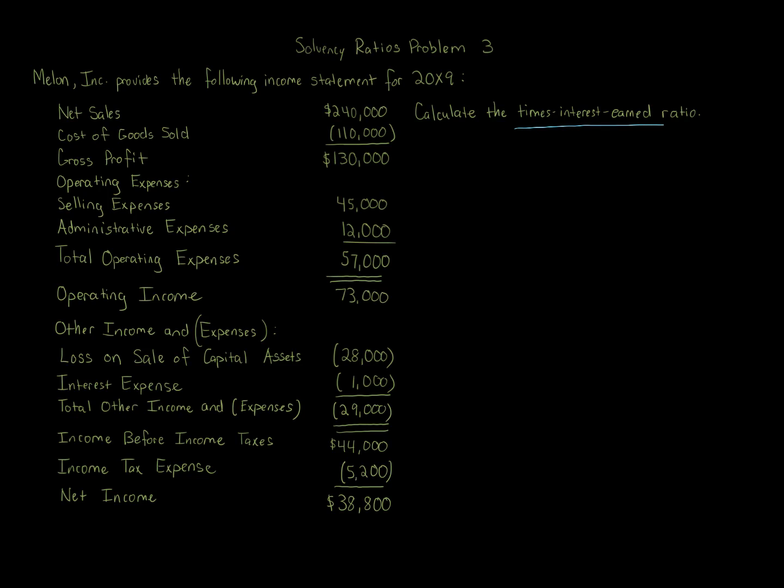We're focusing on the times interest earned ratio. This ratio is part of the solvency analysis, which evaluates a company's ability to pay its long-term debts. There are three major types of calculations in the solvency analysis: the ratio of fixed assets to long-term liabilities, the ratio of liabilities to stockholders' equity (the debt to equity ratio), and the number of times interest charges earned — which is what we have here, the times interest earned ratio.